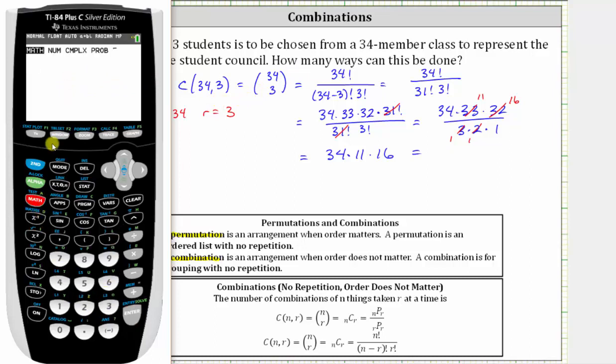Then we select math, right arrow to probability, which is this column here. The combination is option 3, so we can either arrow down to number 3 and press enter, or just press 3. Then we enter r, which is 3, and enter. And of course, we get the same result, 5,984.